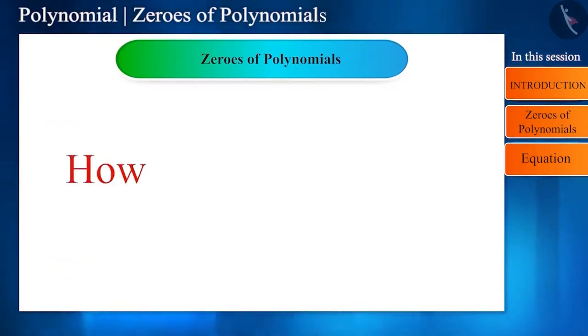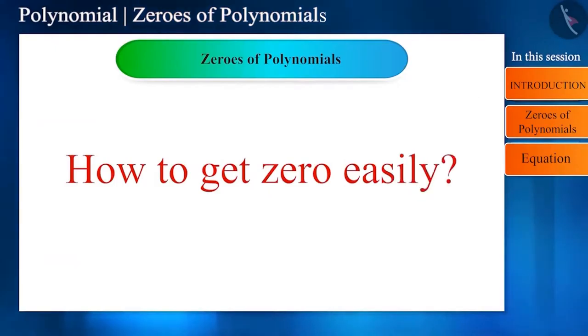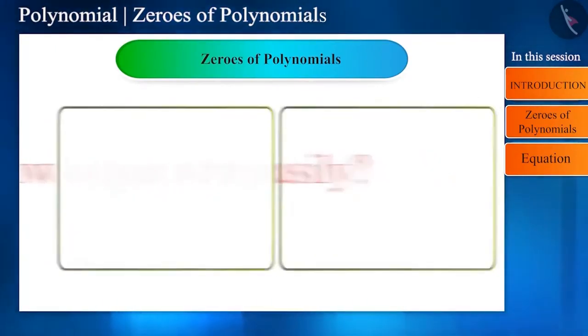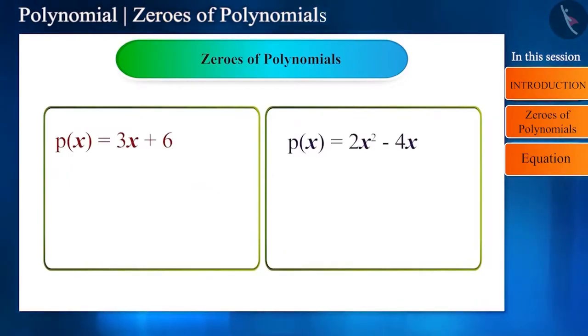But, shall we continue to find the zeros by keeping different values in the polynomial? This can take a long time. Therefore, it is also solved. If the polynomial is equated to 0, then we get the zero of the polynomial directly. So, let's see how.